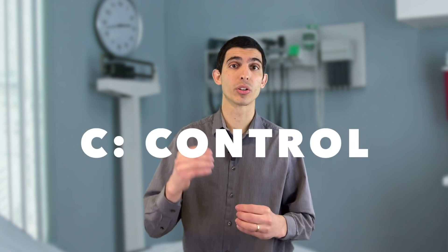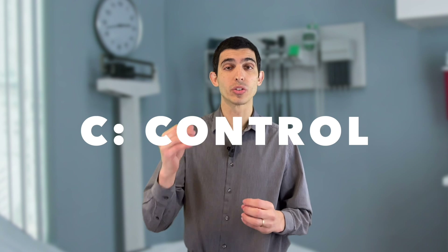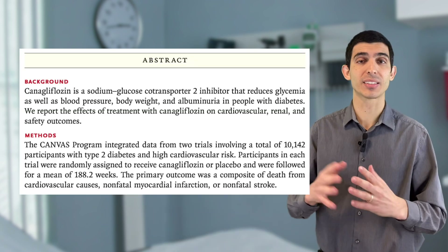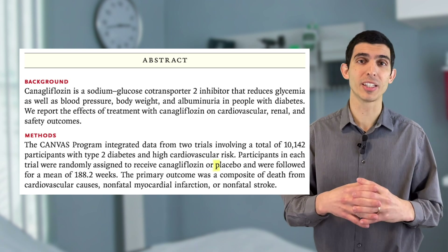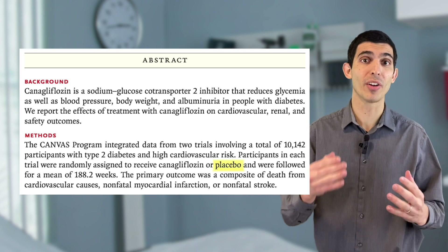Just as straightforward, you have the letter C. C stands for control. In the control group, you can have placebo, another drug, or sometimes just the absence of the intervention — it's very variable. In this example, in the Canvas study, the control group was placebo. Very simple and very straightforward — it usually is just like that.